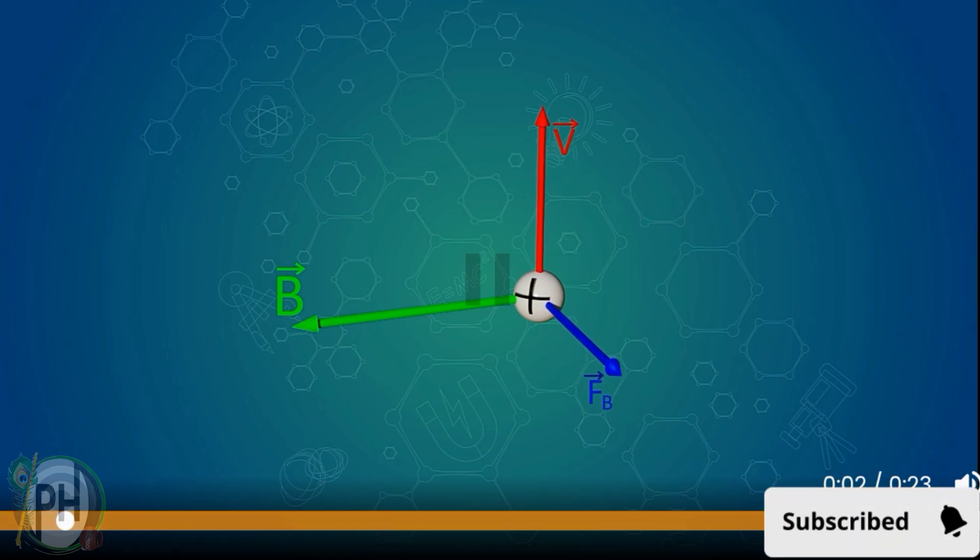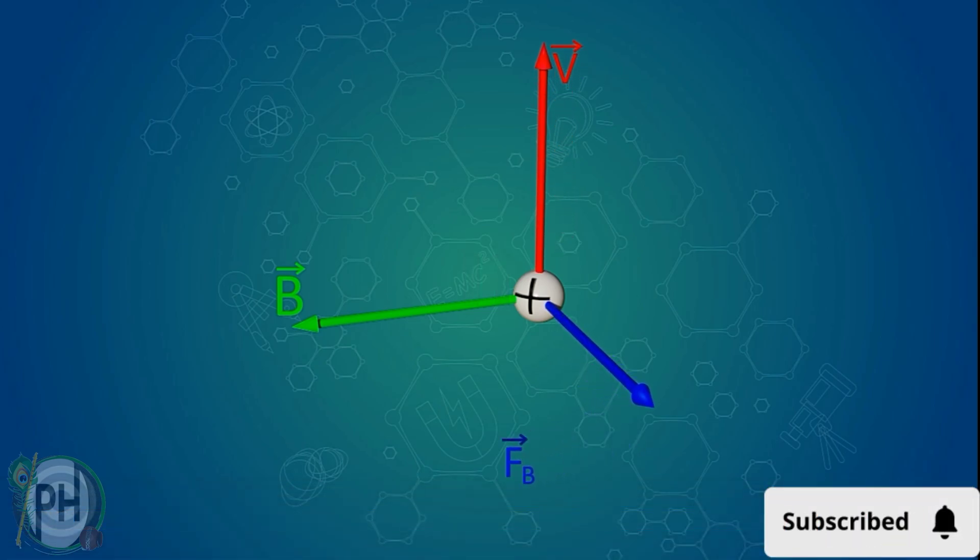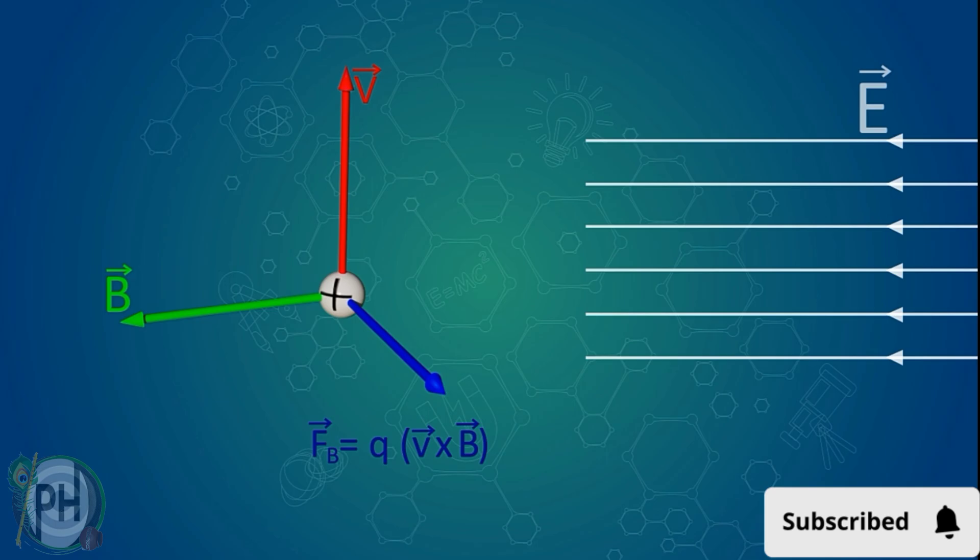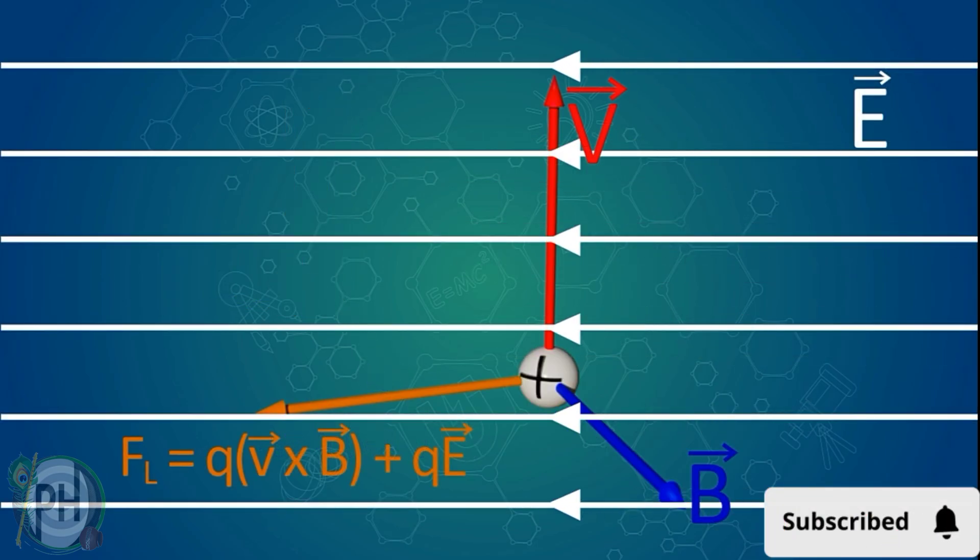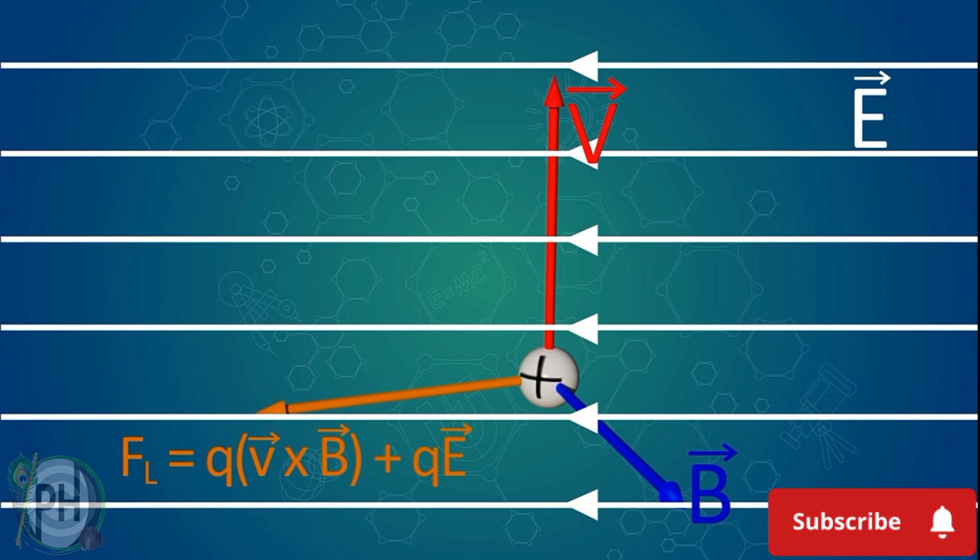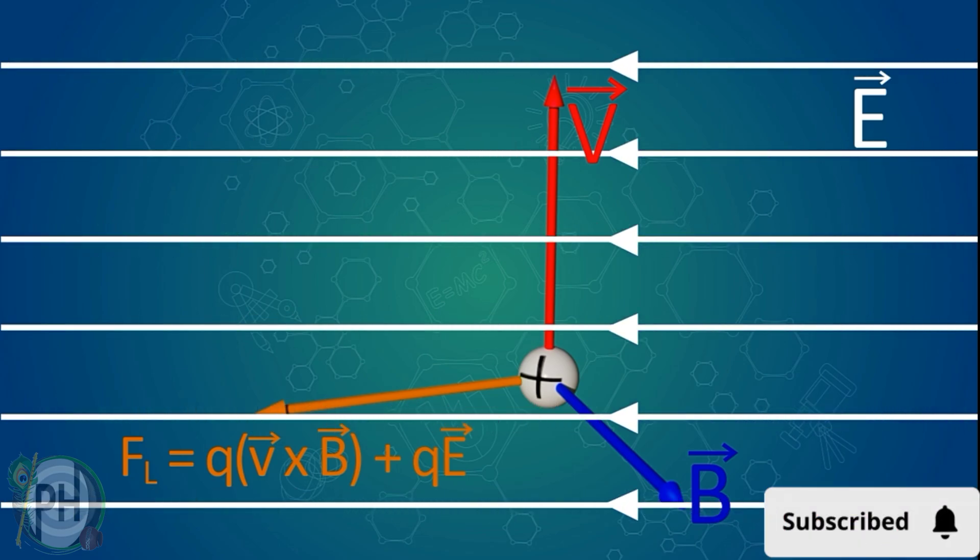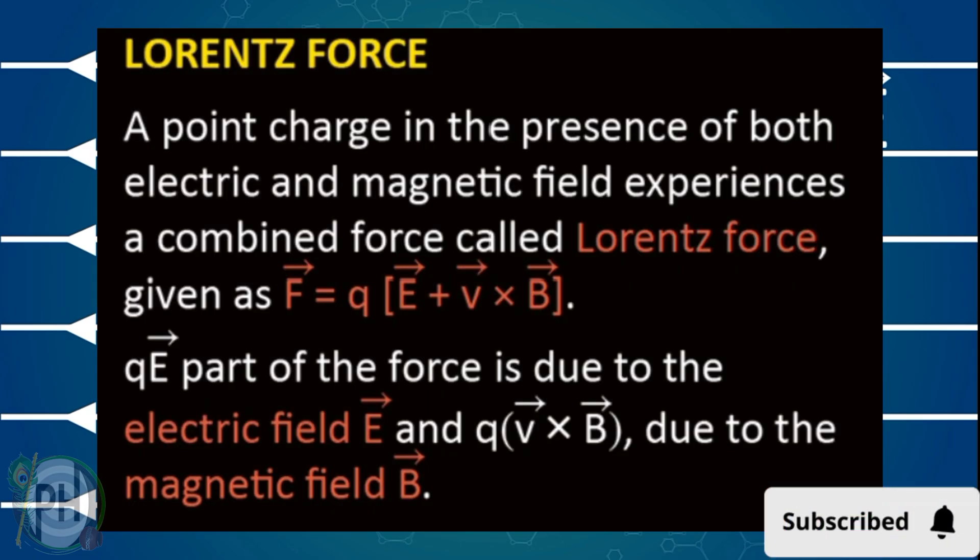A point charge in the presence of both electric and magnetic field experiences a combined force called Lorentz force given as F equals Q into E plus V cross B. QE part of the force is due to the electric field and Q into V cross B due to the magnetic field.